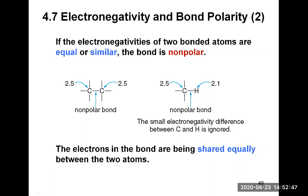Another type of non-polar bond occurs when the electronegativity difference between two atoms is small. For example, in a C-H bond, carbon has an electronegativity of 2.5 and hydrogen has 2.1 — a difference of 0.4. This is considered non-polar because the electronegativity difference is small enough to be ignored. The C-H bond is therefore non-polar, with electrons shared equally between carbon and hydrogen.